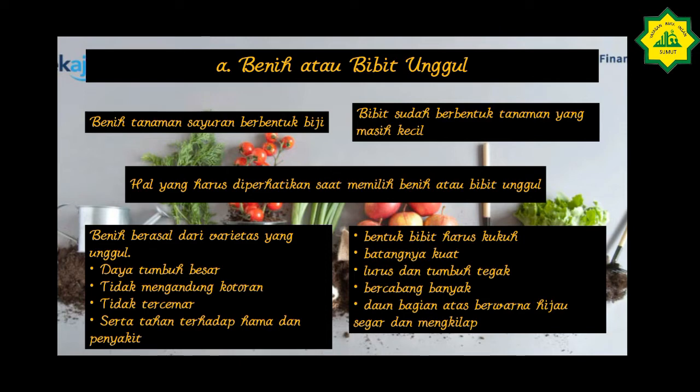Yang pertama, benih atau bibit unggul. Benih adalah tanaman sayuran yang berbentuk biji. Bibit biasanya sudah berbentuk tanaman yang masih kecil. Hal yang harus diperhatikan saat memilih benih atau bibit unggul: benih berasal dari varietas yang unggul, daya tumbuhnya besar, tidak mengandung kotoran, tidak tercemar, serta tahan terhadap hama dan penyakit.